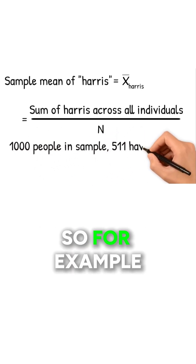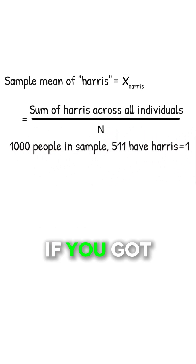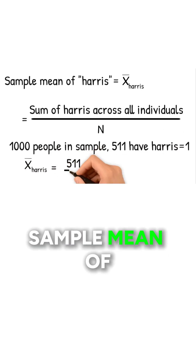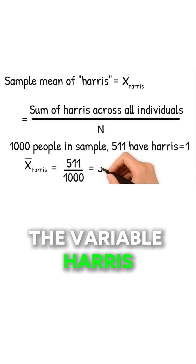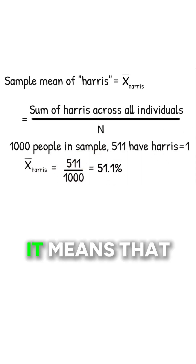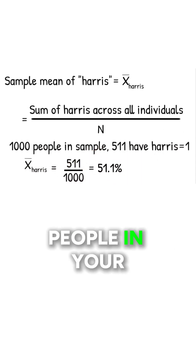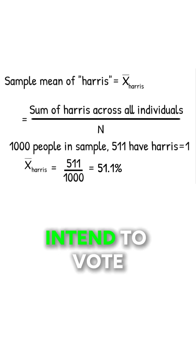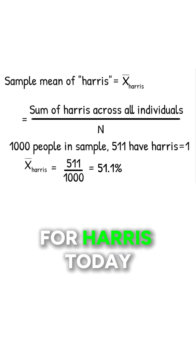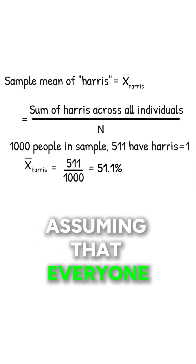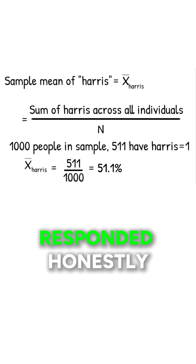So for example, if you got 51.1% for the sample mean of the variable Harris, it means that 51.1% of the people in your sample intend to vote for Harris today, assuming that everyone responded honestly.